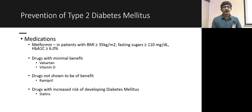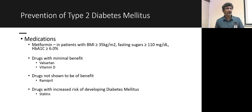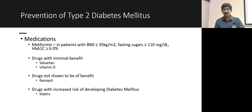For medications to prevent diabetes in someone with pre-diabetes who is overweight or obese, you can use metformin. Some drugs have shown minimal benefit — Valsartan and vitamin D. Ramipril has not shown benefit. Importantly, prolonged statin use has been associated with an increased risk of developing diabetes — keep that in mind.